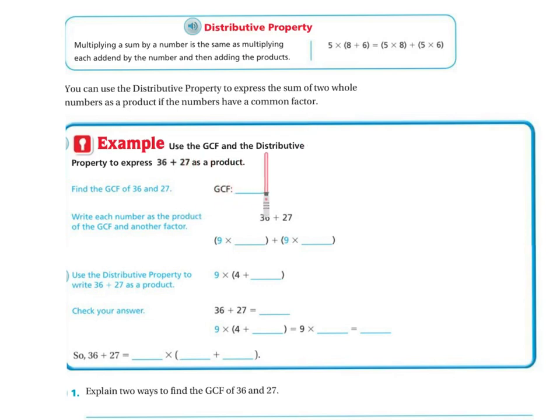So use the greatest common factor and the distributive property to express 36 plus 27 as a product. So find the greatest common factor of 36 and 27. The greatest common factor is 9. So it says write each number as a product of the greatest common factor and another factor. So for 36, if I do 9 times 4, and for 27, it's 9 times 3, right?